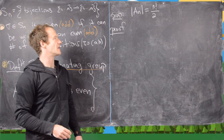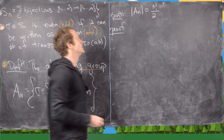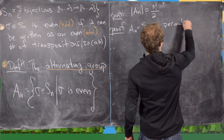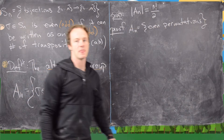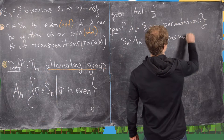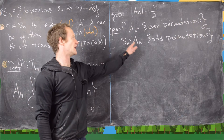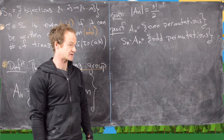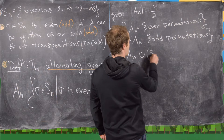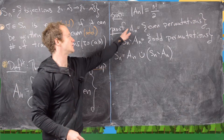We want to prove that the number of elements in An is n!/2. We'll do that by making a certain bijection. Recall that An is all even permutations, so Sn minus An is all odd permutations — since any permutation is either even or odd, removing the even ones leaves only the odd ones. Also, Sn equals the disjoint union of An with Sn minus An. The next thing we can show is that these two sets have the same number of elements.